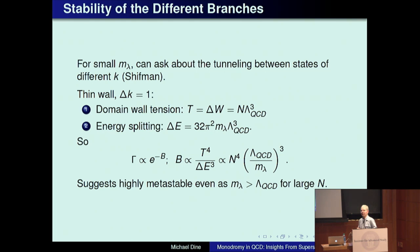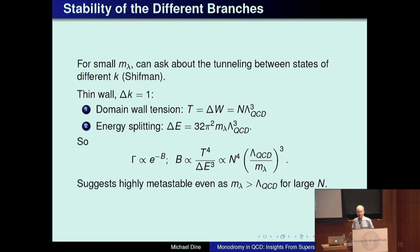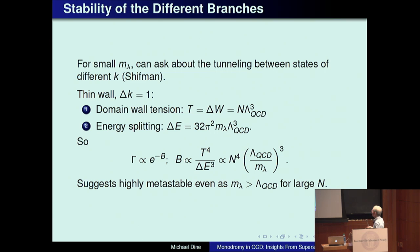Now we have a physical picture for what these branches are and can ask about things like their stability. For small m_lambda, we can ask about tunneling between states of different k, doing this in the thin wall approximation. The domain wall tension for this system is well known — BPS domain walls with tension equal to the change in the superpotential between vacua, going as N times lambda QCD cubed. The energy splitting goes like 32 pi squared times m_lambda times lambda QCD cubed. Taking the ratio T to the fourth over delta E cubed to get the bounce action, I find N to the fourth lambda QCD cubed over m_lambda. This suggests that if N times m_lambda is even of order lambda QCD, at large N these states will be extremely metastable.